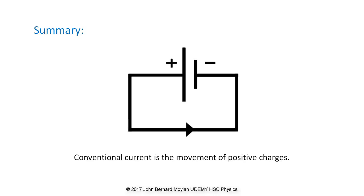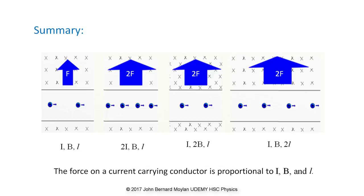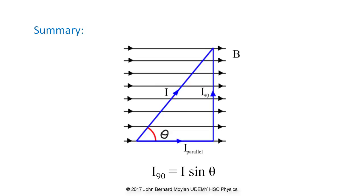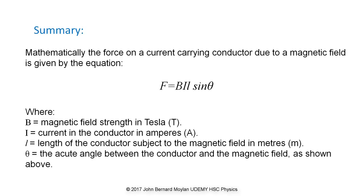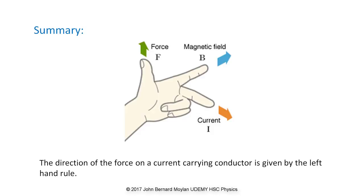Summary: Conventional current is the movement of positive charges and flows from positive to negative. The force on a current carrying conductor is directly proportional to the current, the magnetic field strength, and the length of the conductor subject to the magnetic field. The force is also directly proportional to the sine of the angle between the current direction and the direction of the magnetic field. Mathematically, the force is given by F = BIL sin theta, where B is the magnetic field strength in tesla, I is the current in amps, L is the length in meters, and theta is the acute angle between the current direction and the magnetic field. The direction of the force is given by the left hand rule.